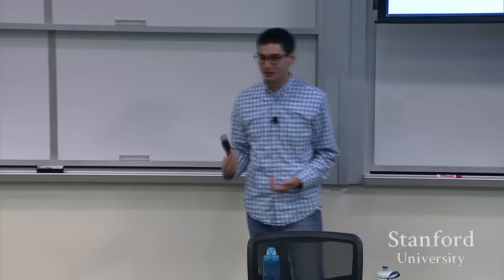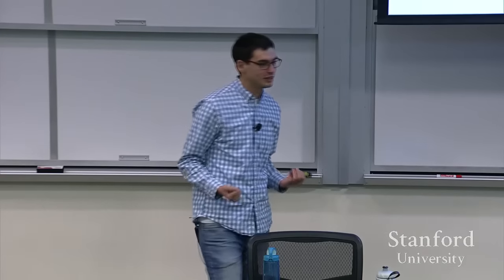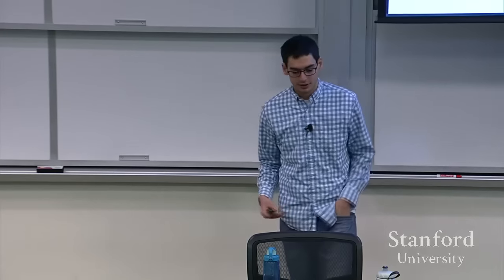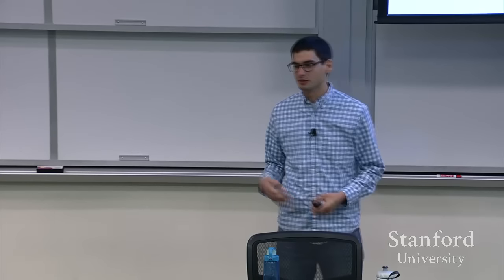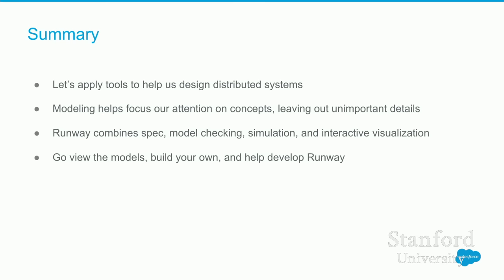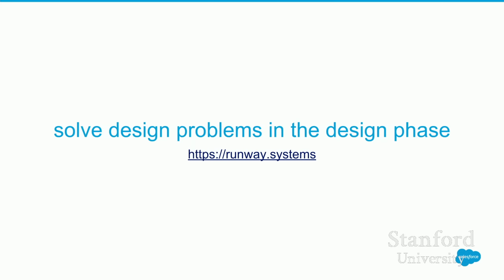To wrap up: I argued that we should be applying new tools to help us design our distributed systems beyond the whiteboard. Models should be the basis, because modeling helps focus our attention on things that matter and leaves out unimportant details like memory allocation. Runway combines specification, model checking, simulation, and visualization into one tool. The hope is that even though most of the time we couldn't justify doing these things independently, if we pack it into one tool, maybe there's enough value to make it worthwhile. You can go check out the models, build your own — this is all open source. Let's solve problems at the design phase.